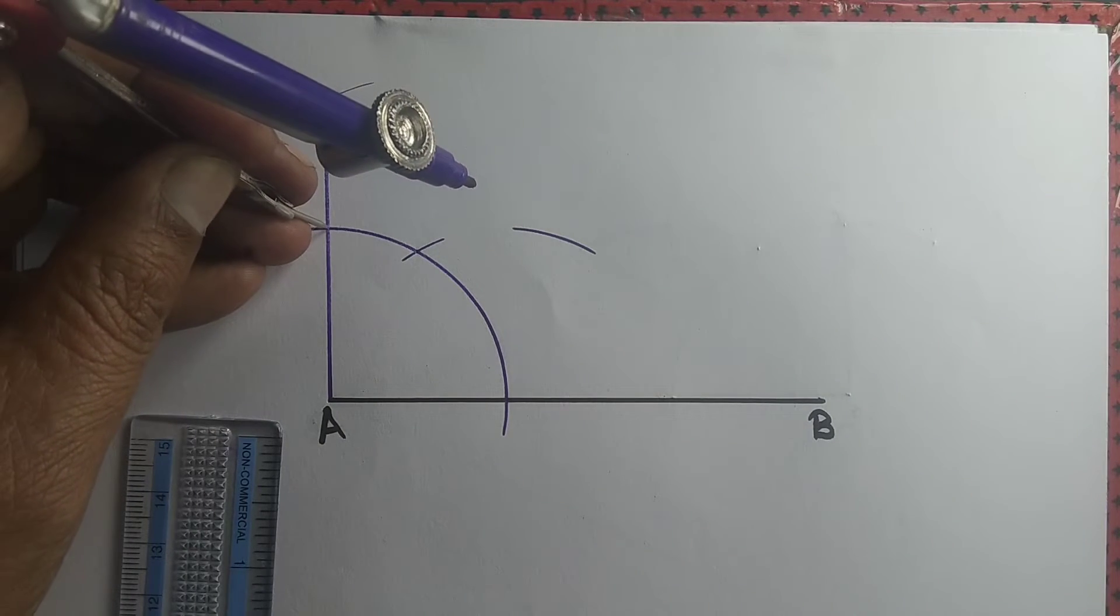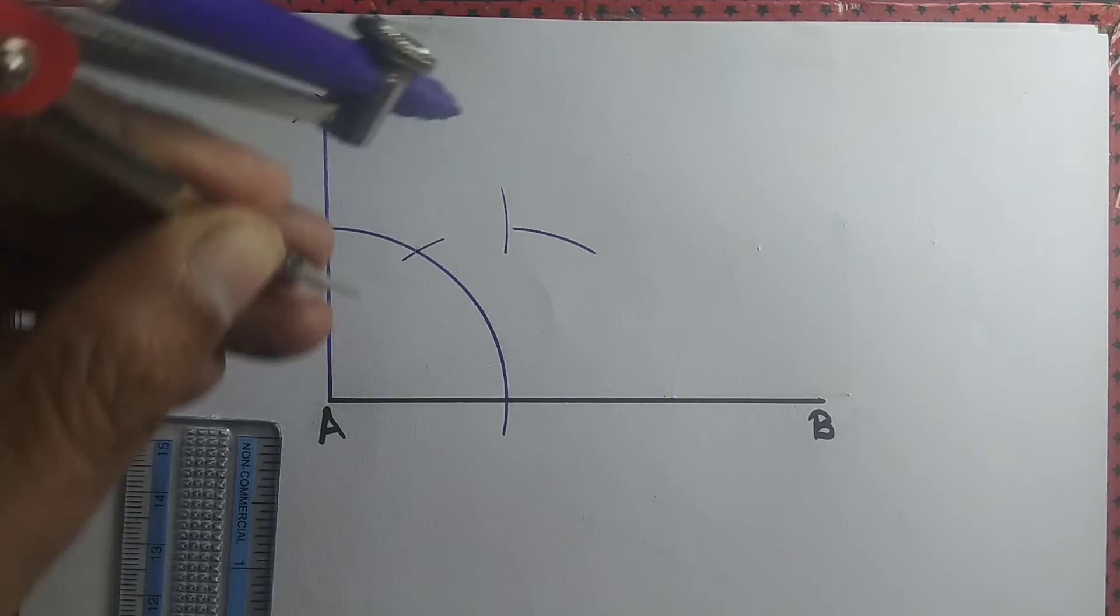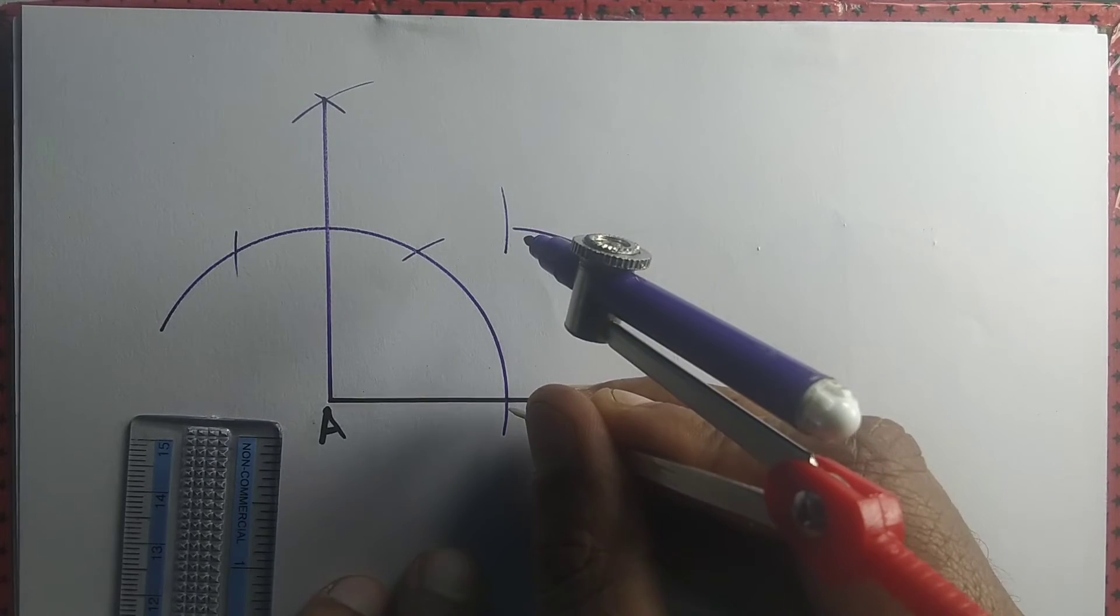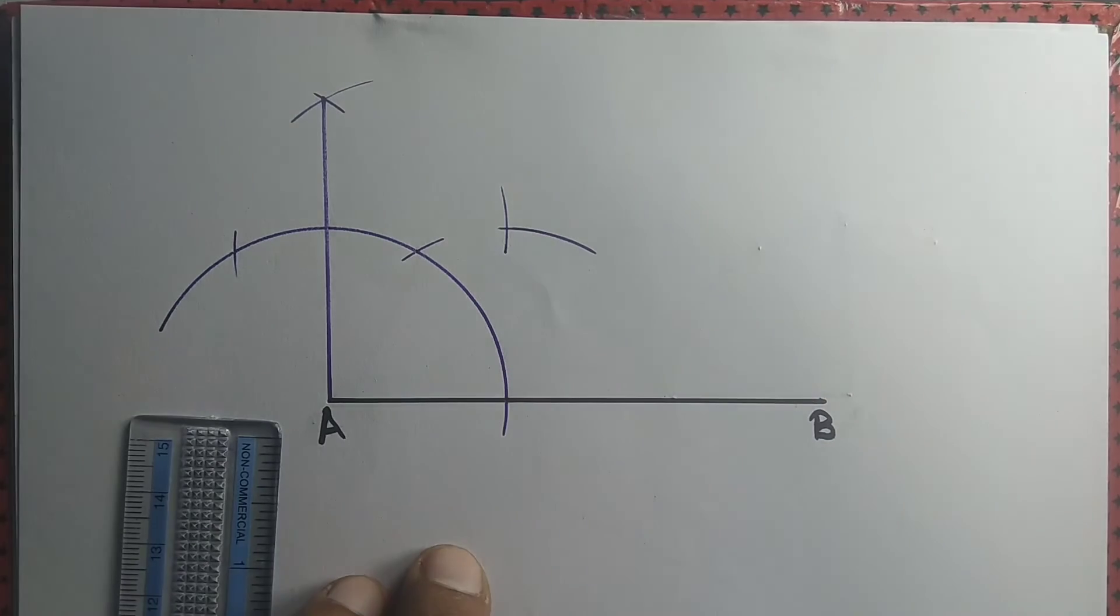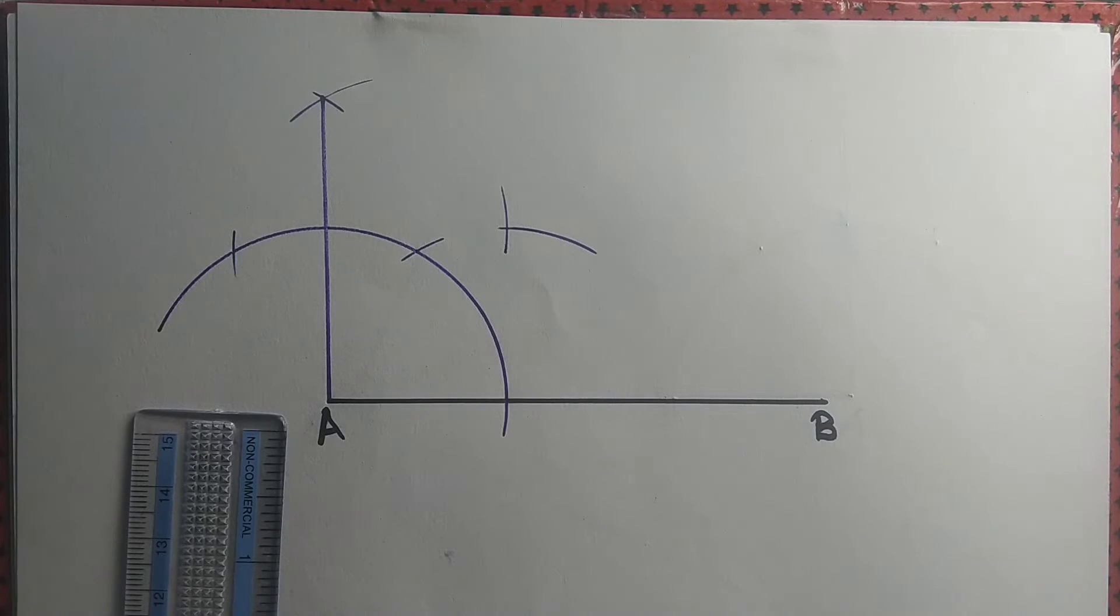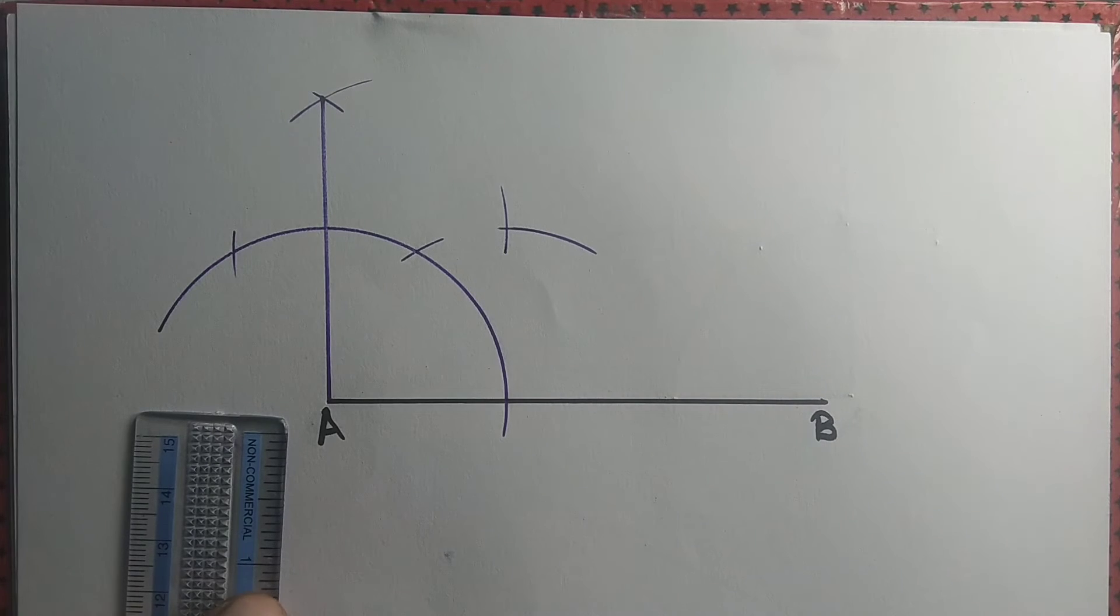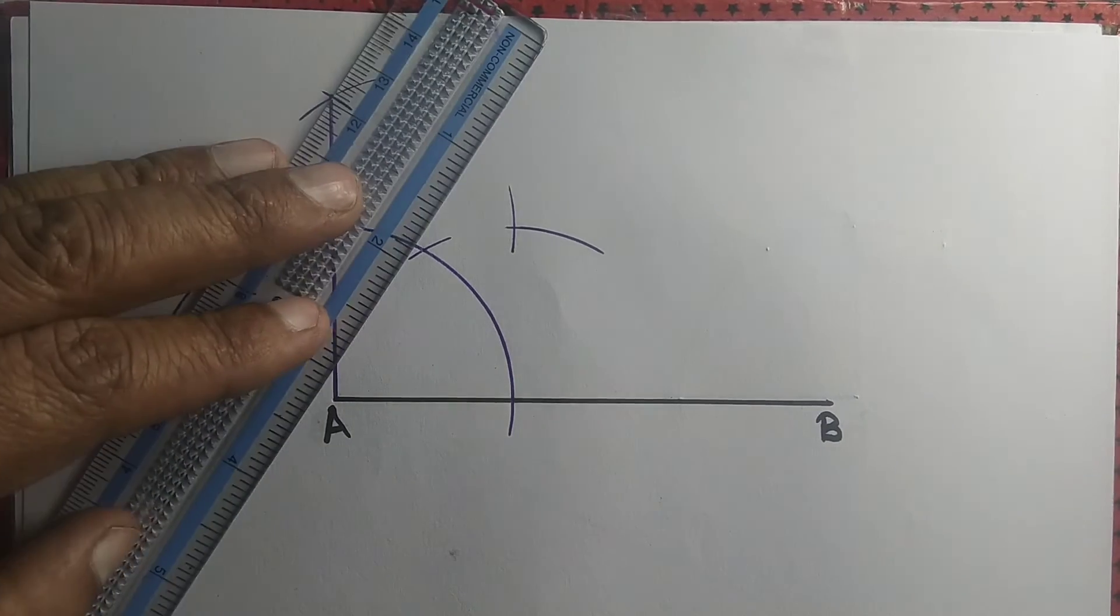For that purpose, we draw 2 arcs from the intersection point of the big circular arc with the 90 degree line. These arcs intersect at some point.